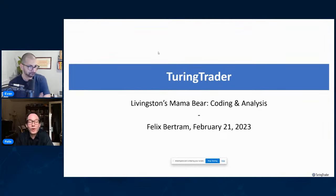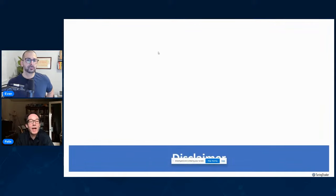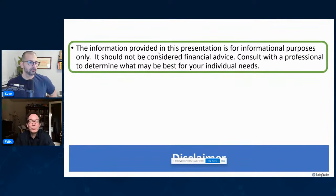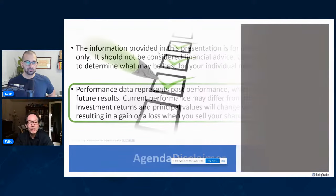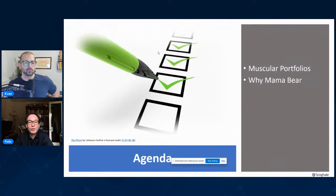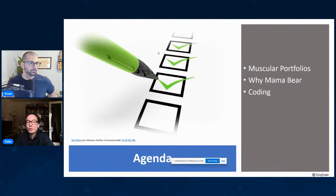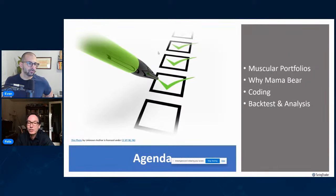So we talked about the topic. There's a little disclaimer here: everything we do here is for informational purposes only, this is not financial advice, and everything is based on past performance which is not necessarily indicative of future results. So what are we going to do today? We're going to talk about the Muscular Portfolios book, why we picked the Mama Bear strategy for this exercise, then do some live coding, run some backtests, look at the results, and have room for questions.